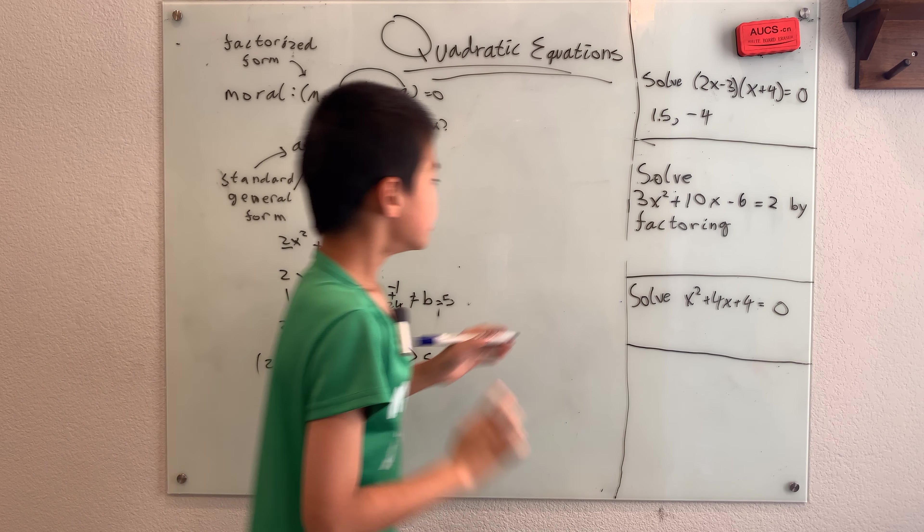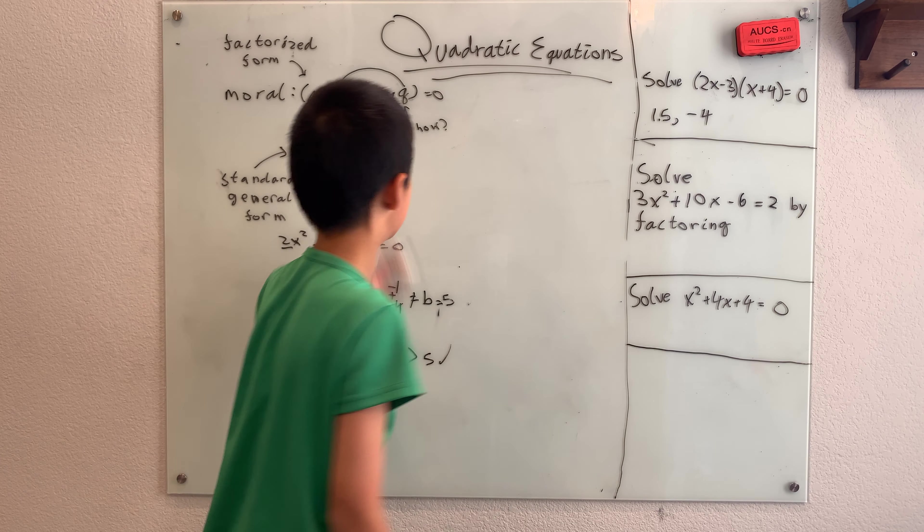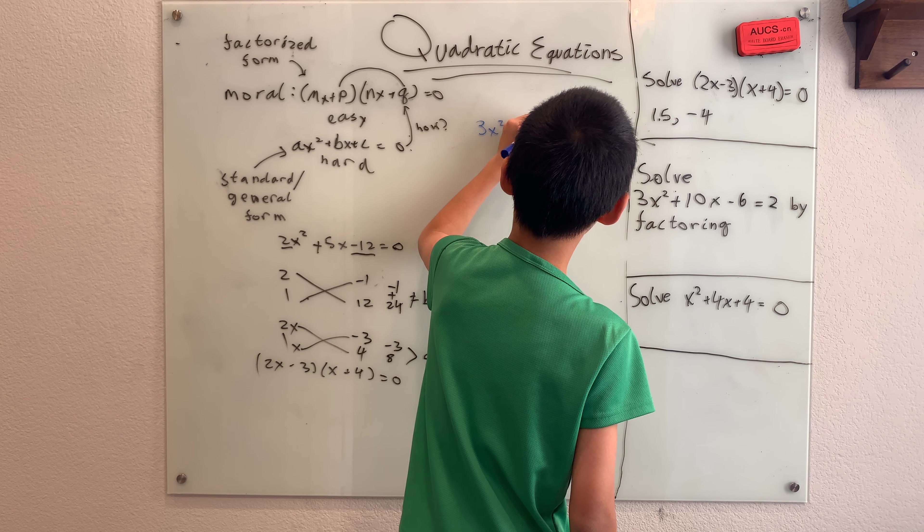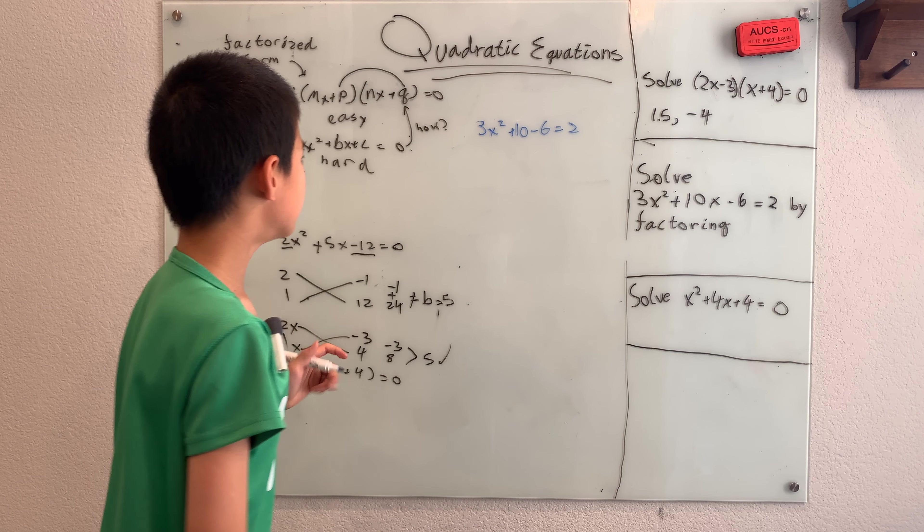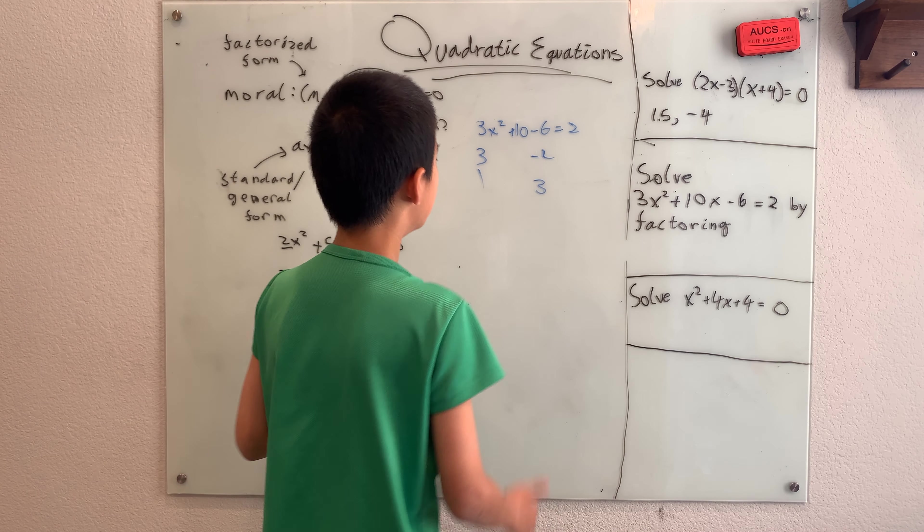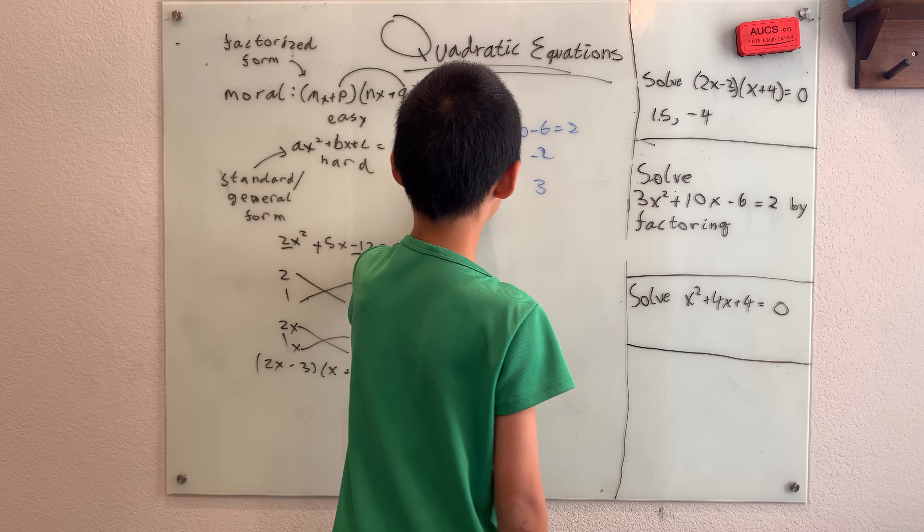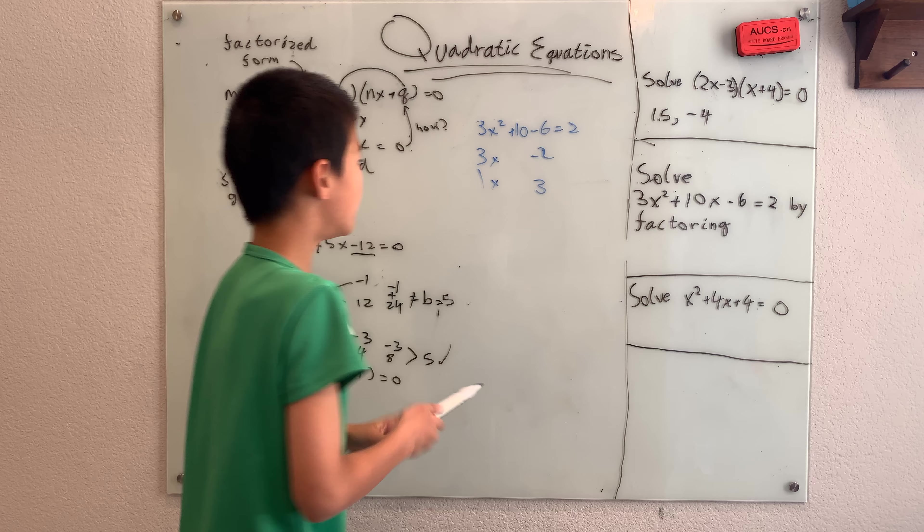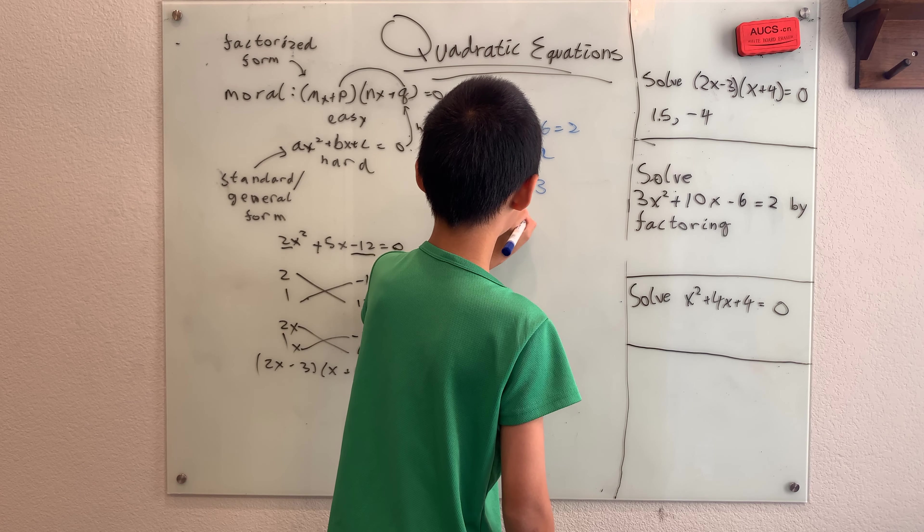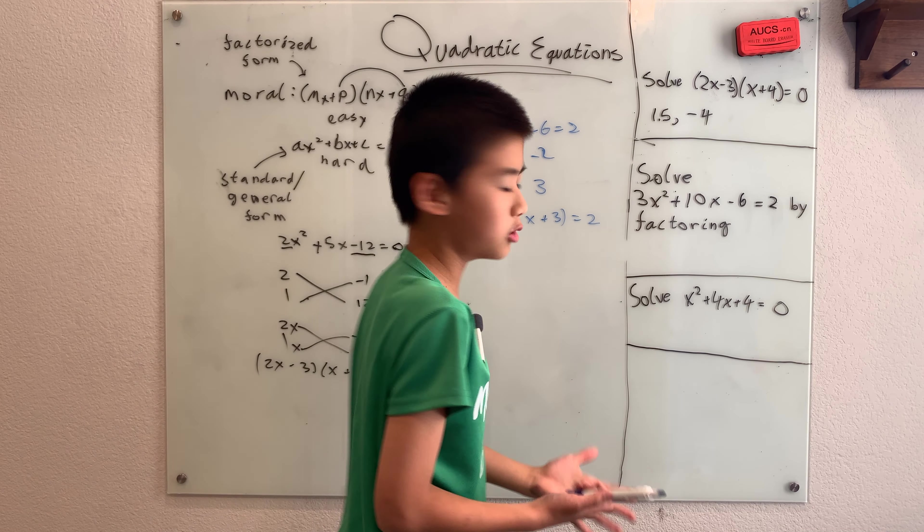Let's solve 3x squared plus 10x minus 6 equals 2 by factoring. 3x squared plus 10x minus 6 equals 2. Now, don't just go ahead and start breaking this up into 3 and 1, like, say, negative 2 and 3. Don't just start breaking this up, because even if you do get a factorized form, like, this manages to work somehow, you get 3x minus 2 and 1x plus 3. Well, the point is, in the end, this 3x minus 2 and x plus 3, that's equal to 2. You can't solve this equation, right? Because it's not equal to 0.